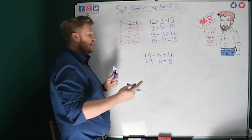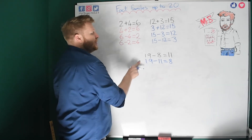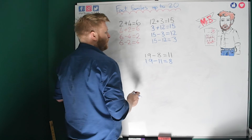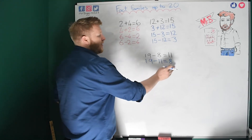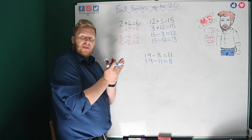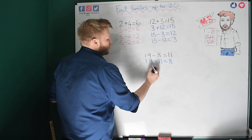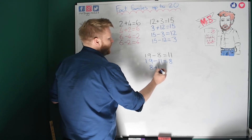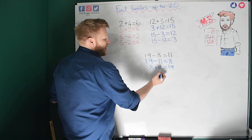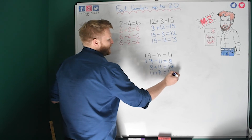I didn't have to work that out — I know it's there in the fact family. Now I need 2 additions. With additions, the biggest number is on the other side of the equals, because I'm putting 2 numbers together and it always gets bigger. So 8 plus 11 must equal 19, and I can swap those around: 11 plus 8 equals 19.